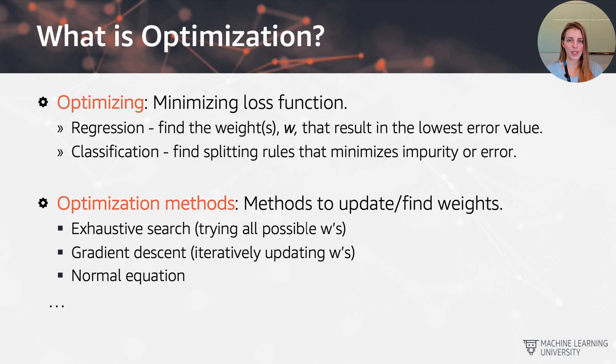So optimization methods, let's talk a little bit more about what they are and how they work. We already said they are generally methods that help us update or find weights or find splitting rules. And what we could try for example would be an exhaustive search where we just try all possible values of w. In practice that's not really going to work for us because that's just computationally too inefficient. That would take too long and there could be infinitely many w values to try out.